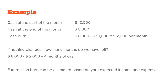Cash burn is the amount of cash you spend in a certain period. Most businesses operate on a monthly cycle. You can calculate all these figures on a daily, hourly, weekly, monthly, quarterly, or annual basis — any given period. But most businesses do their accounting on a monthly basis, so that's what I'll use for all these videos.